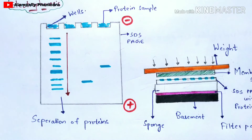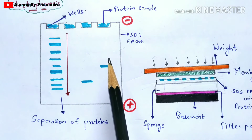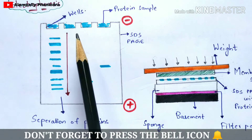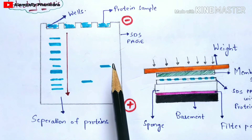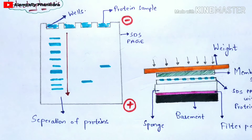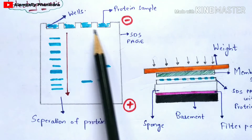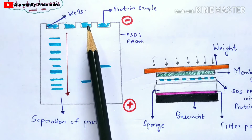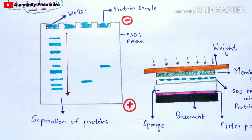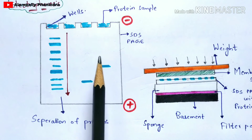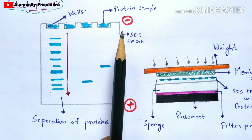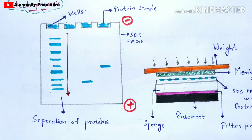Now you are going to perform electrophoresis. Electrophoresis means you apply a voltage of current, and once you do, the movement of particles occurs from the wells — from the negative direction to the positive direction. The protein sample is present at the negative side of the SDS-PAGE, and once the current is applied, the proteins start separating according to their structures.